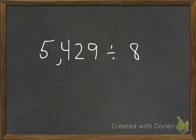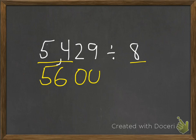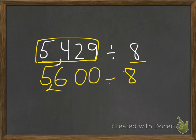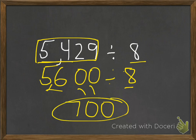Here's another example. We have 5,429 divided by 8. We think of the multiples of 8 closest to 54, and 56 is the closest multiple. The last two digits become 0s, so we round 5,429 to 5,600, and we divide that by 8. I know 56 divided by 8 is 7, and the two zeros go into our quotient, so the estimated answer is 700.